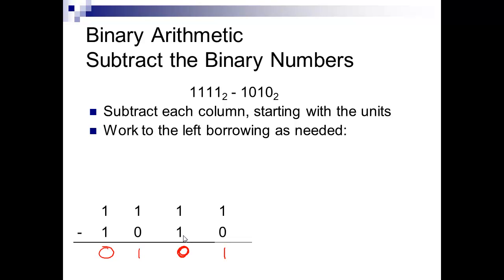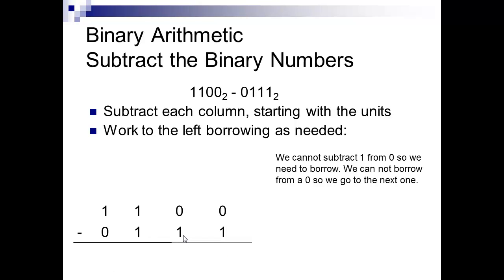Now let's do when we have to borrow — it's a little different. We've got 1100 minus 0111, and we're having to take a 1 from a 0, and we can't do that. We don't have negative numbers here, so we have to borrow. We can't borrow from the zero, so we have to borrow from this 1. That 1 becomes a 0, and we're going to add a 2 to the next position.